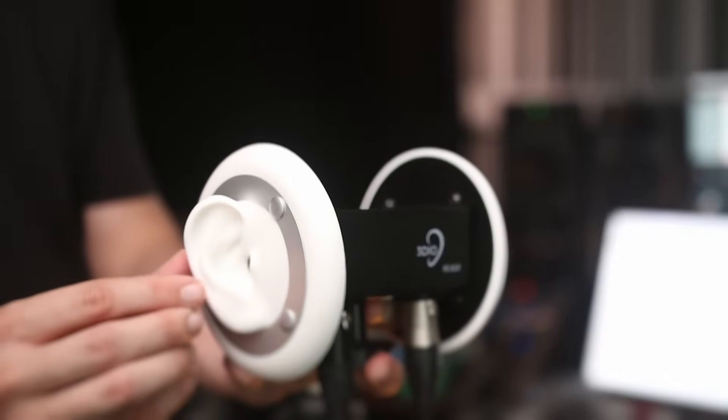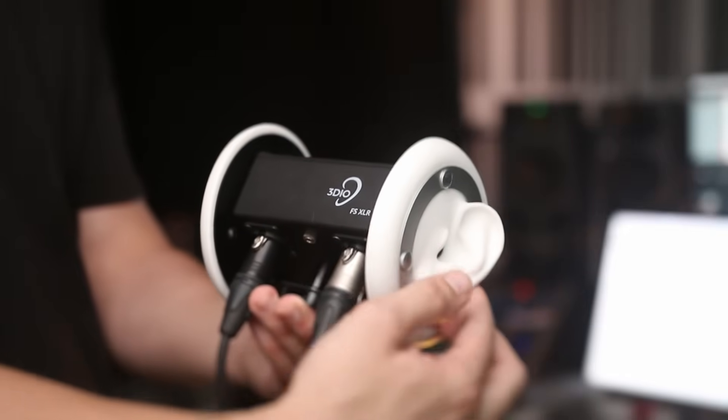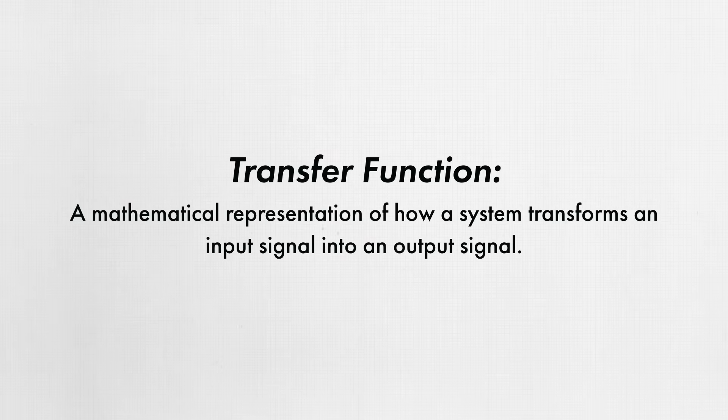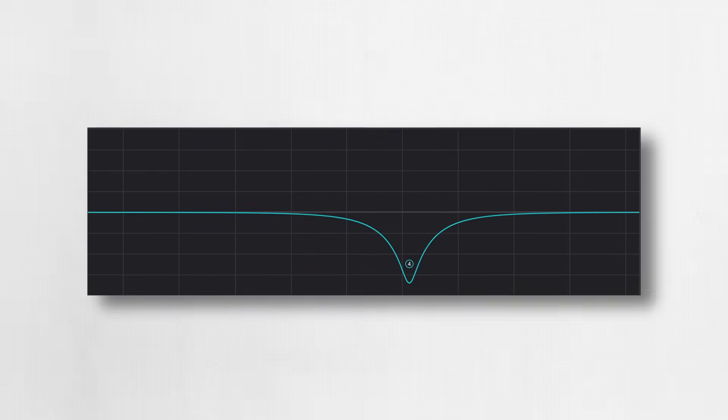Binaural microphones not only capture ILDs (interaural level differences) and ITDs (interaural time differences), but they also capture the HRTF, or head-related transfer function. HRTF might sound like a complicated term, but here's a simple way of understanding what it is. According to Google, a transfer function is a mathematical representation of how a system transforms an input signal into an output signal. It's easiest to understand transfer functions by looking at the transfer function of a simple EQ or filter — for example, a high-pass filter or a bell EQ cut. It describes the difference between what goes into the EQ and what comes out, and a head-related transfer function describes the effect that the head and ears have on sounds from various directions.